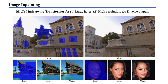The top example in this slide shows the result of our model processing a high-resolution input directly. On the bottom, we show examples of our model generating diverse inpainting results given the same input image and mask.